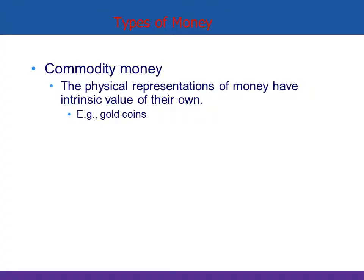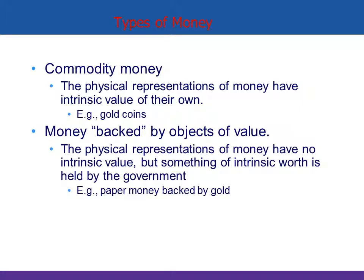There are three types of money. The first is commodity money, where the actual physical object is the money — gold coins, silver coins, shark's teeth, or elephant tusks. Then we moved to money backed by objects of value, where every dollar in circulation was backed by a certain amount of a physical commodity. We were on the gold standard for a while.